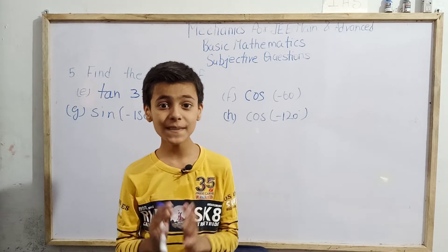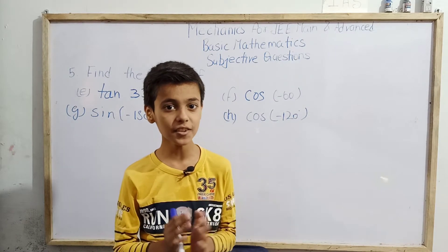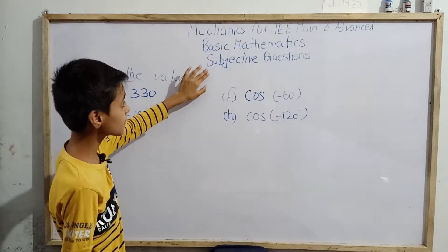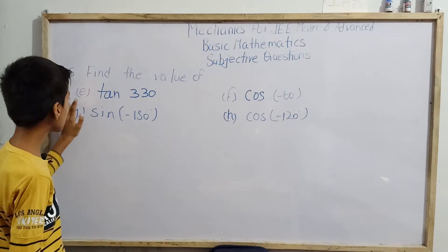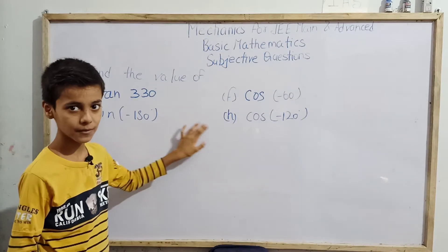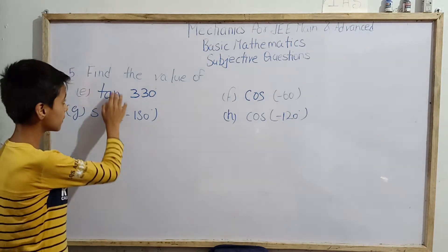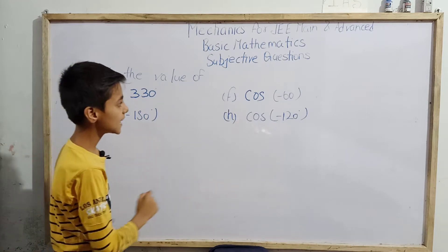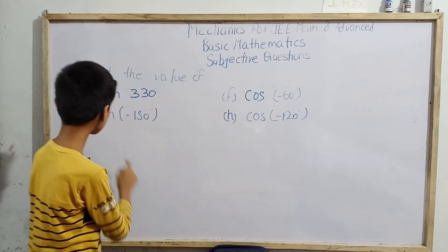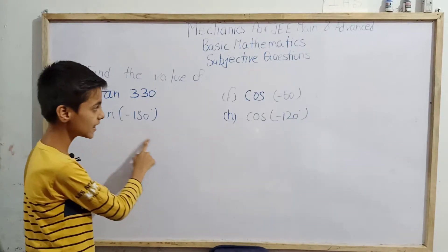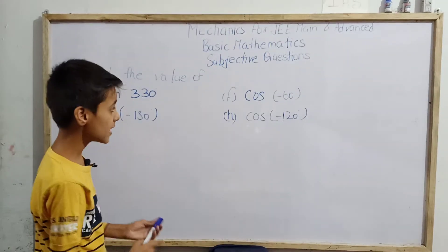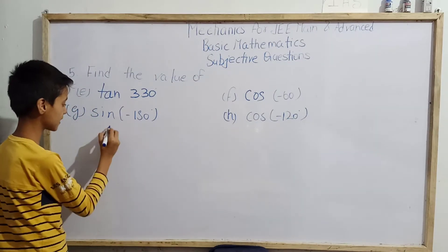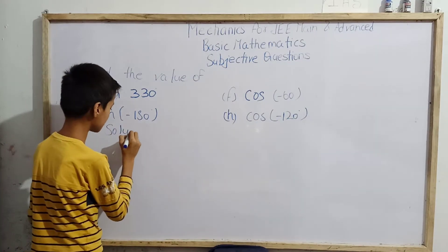Hello students, I am Salim Khan, studying fifth standard, and today we have the mechanics for JEE Main and Advanced basic mathematics subjective questions — question number five. The fifth, sixth, seventh, and eighth questions. Question number five is: find the value of the following. Part e: tan 330°, part f: cos(-60°), part g: sin(-150°), and part h: cos(-120°). Let us begin.